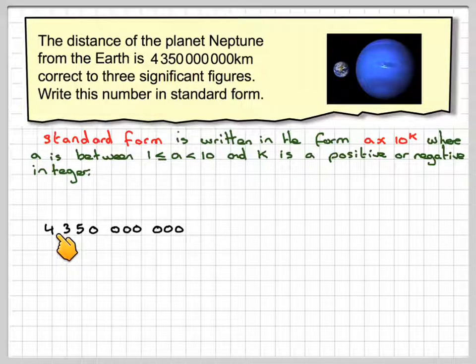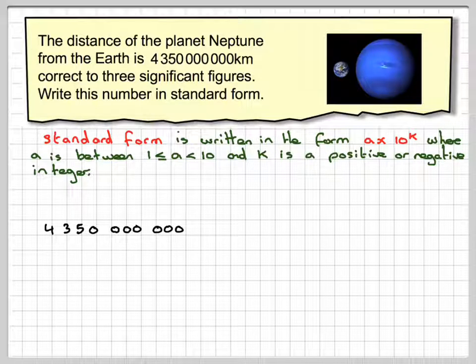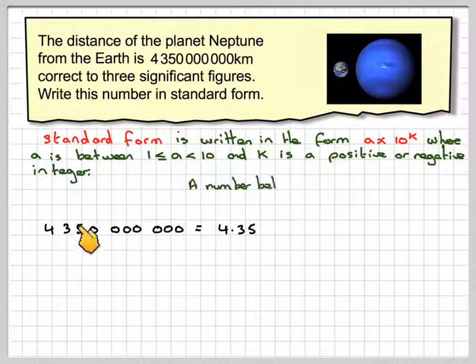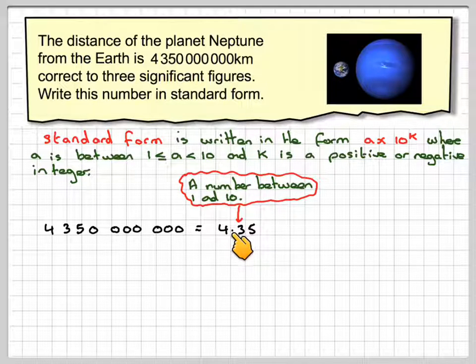So we've got our number, 4,350,000,000. The first thing to do is make this into a number between 1 and 10. So that means the decimal point would have to go there. 4.35 is a number between 1 and 10.